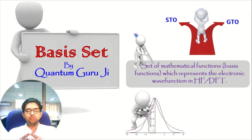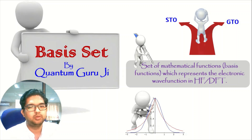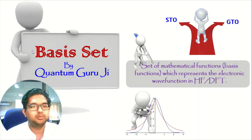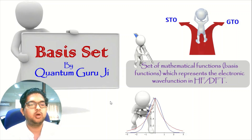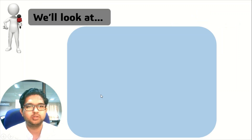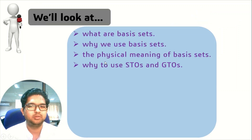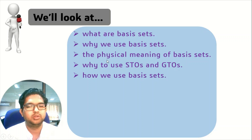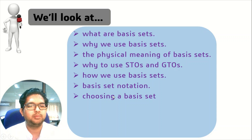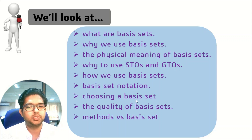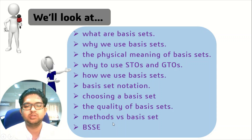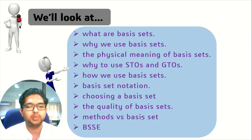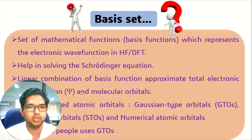Hello everyone, welcome to Quantum Guruji. Today in this video we are going to learn about basis sets — what they are, how to choose a basis set for specific molecules, the physical meaning of basis sets, STOs and GTOs, the various types of orbitals, basis set notation, how to choose a basis set, quality of basis set, methods versus the basis set, and the BSSE — that is the basis set superposition error.